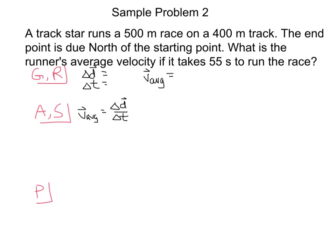One more example, this time using average velocity. So here we have a track star that runs a 500 meter race on a 400 meter track. The end point is due north of the starting point. What is the runner's average velocity if it takes 55 seconds to run the race?